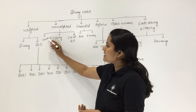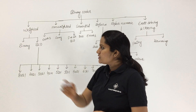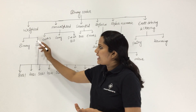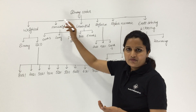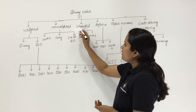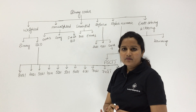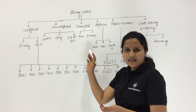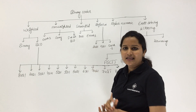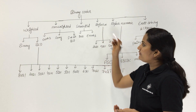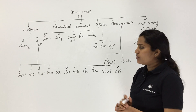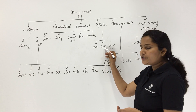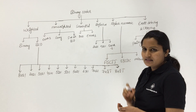We can call XS3 code as non-weighted code, binary code as weighted code, BCD as weighted code, and Gray code as non-weighted code. Under sequential code, we are having two codes: 8421 and XS3. We are also having three reflective codes: 2421 code, 5211 code, and XS3 code.